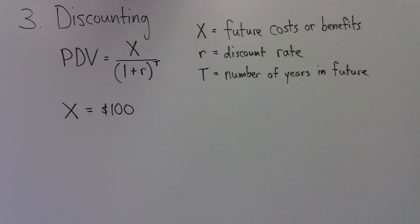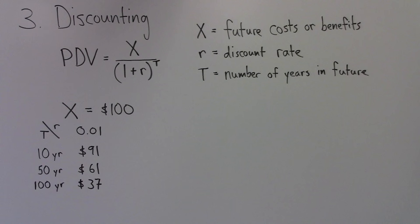The formula for present discounted value and a discount rate of 0.01, or 1%, suggests that a benefit of $100 in 10 years, 50 years, or 100 years is worth bearing a cost today of $91, $61, or $37.